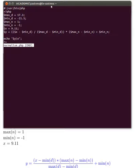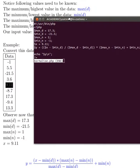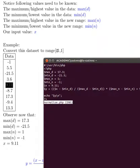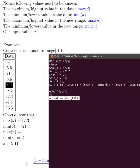So remember from the previous video, you can see that our maximum value from the dataset was 17.3, minimum value from dataset was -21.5. The maximum value for our new range was 1, which is the range between -1 and 1, and the minimum value was -1.